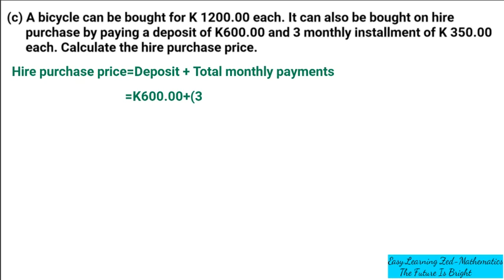Then we're going to write 600 kwacha because we need to evaluate first what is in the brackets. So we're going to say equal to 600 kwacha, then 3 multiplied by 350 kwacha, which gives us 1,050 kwacha. Once we've done that, we need to add 600 plus 1,050 kwacha, which will give us 1,650 kwacha.